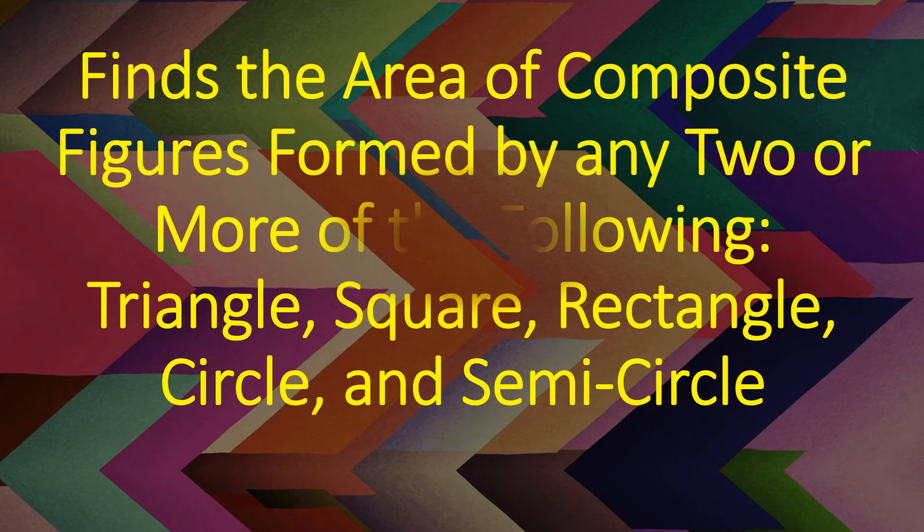Our lesson for today is finding the area of composite figures formed by any two or more of the following: triangle, square, rectangle, circle, and semicircle.